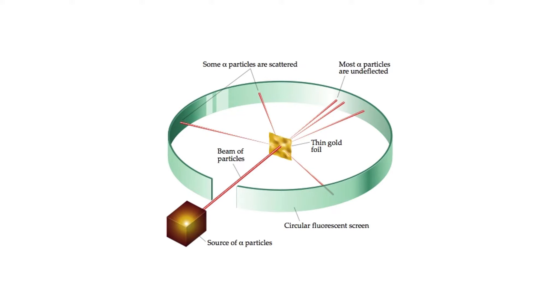Rutherford also did the alpha scattering experiment. Over here we have the source of the particles and when he directed them, when he hit them to a thin gold foil, he noticed that most of the particles are undeflected and some are scattered and some just rebound off it. So he noticed that the particles are just moving off each other, they are coming in different directions. This is when he noticed that they weren't the same.